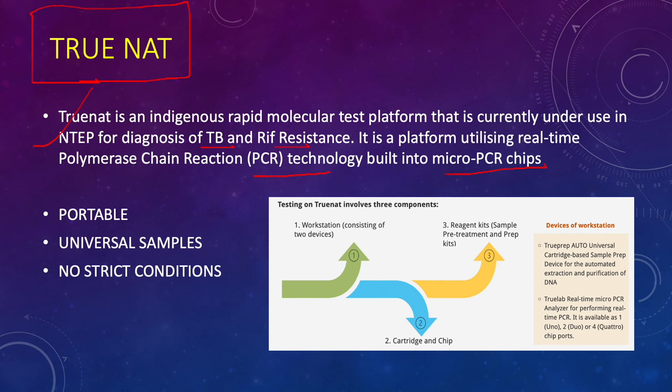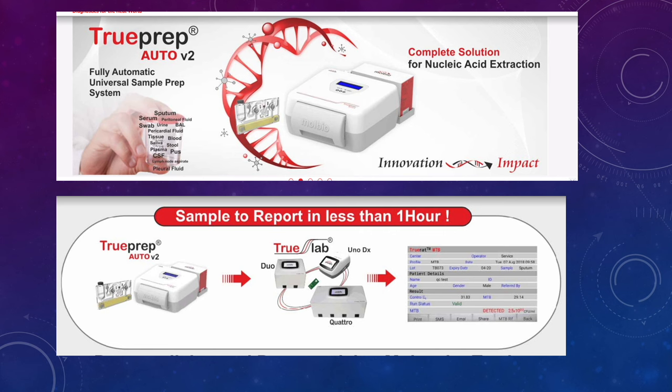TrueNAT has a two-device workstation: one device extracts the DNA and the other amplifies it, with reagent kits to prepare the sample. Its universal sample prep system can accept sputum, serum, swab, peritoneal fluid, bowel fluid, tissue, blood, saliva, plasma, CSF, pus, pleural fluid, lymph node aspirate — everything can be entered. It extracts the nucleic acid, then the TrueLab system amplifies the DNA and produces a result. The key difference is cartridge versus PCR microchip.